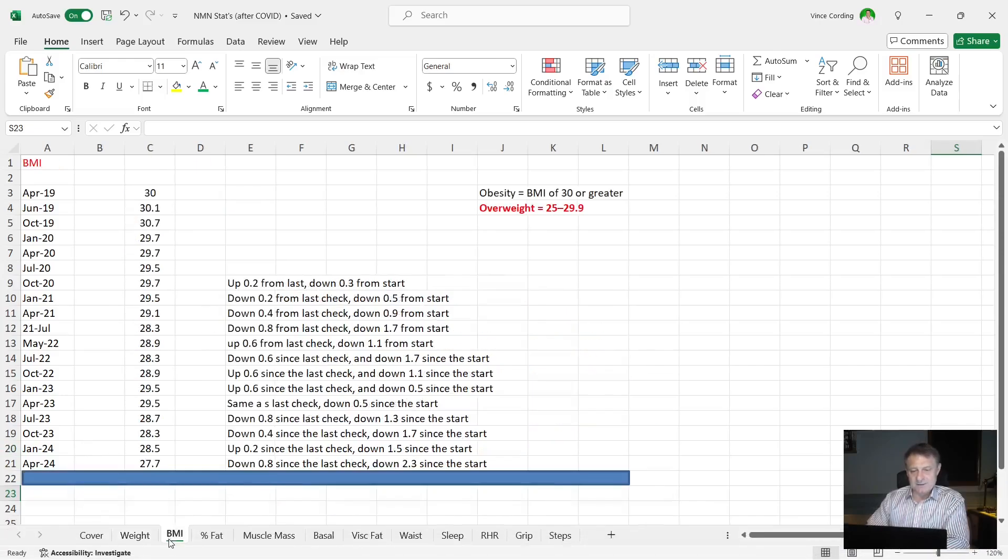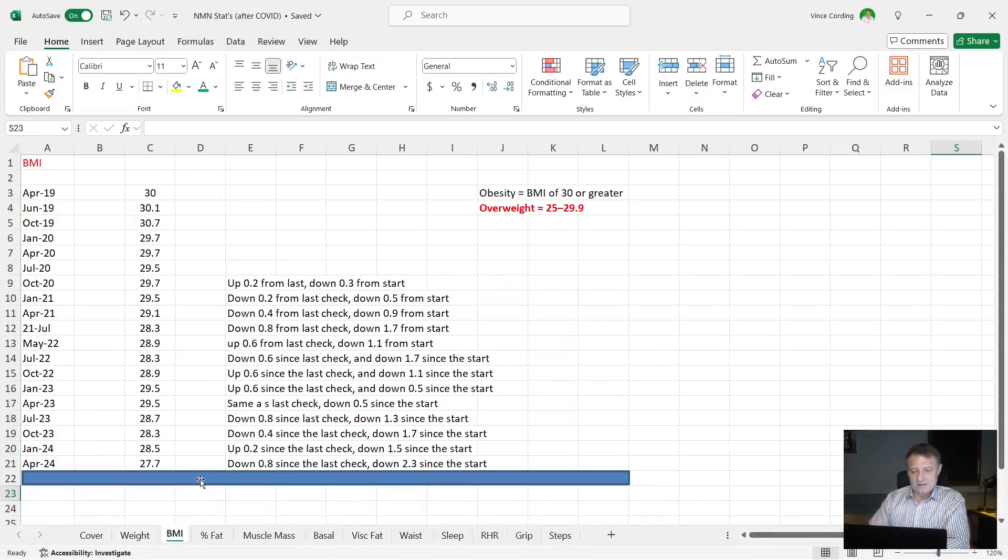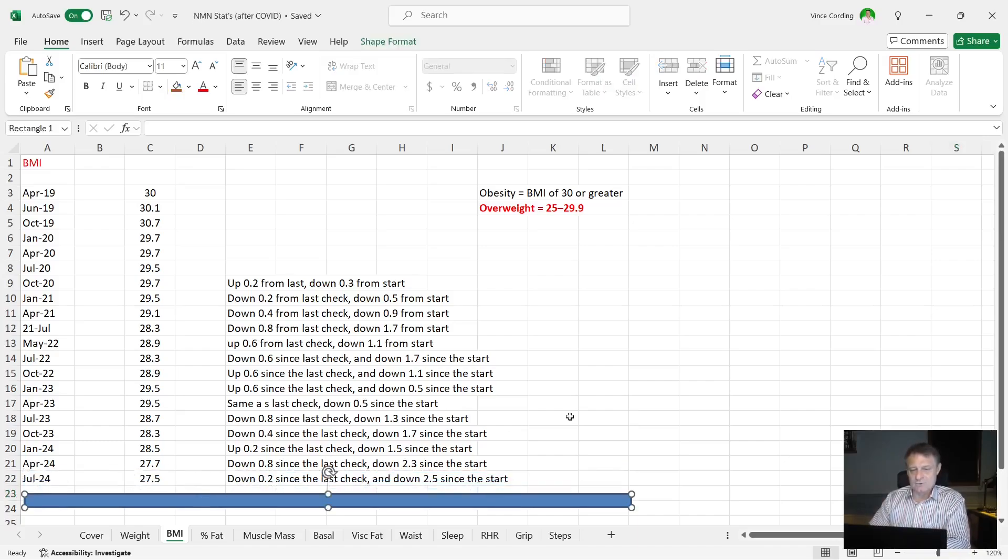Next thing we're going to look at is my BMI. You can see here that it was 27.7. Remember, I'm not a big fan of BMI because it measures all your weight as one. It doesn't differentiate between fat and muscle. That said, I'm down to 27.5, which for some people is good. For me, I'm not really that bothered.